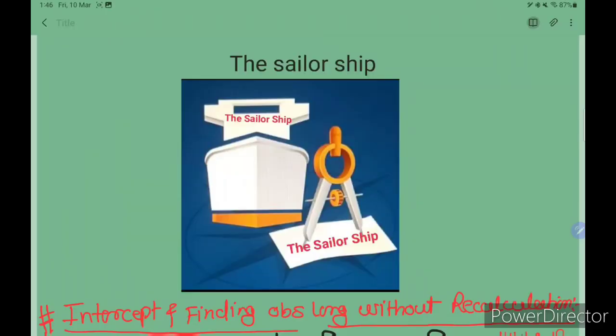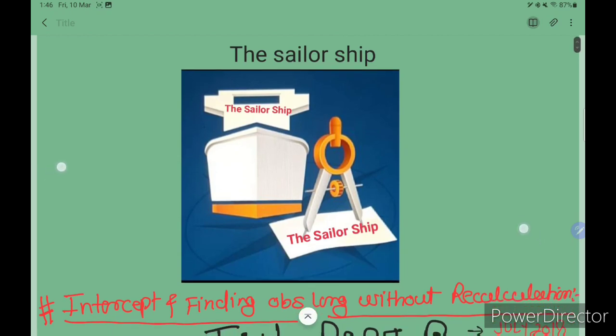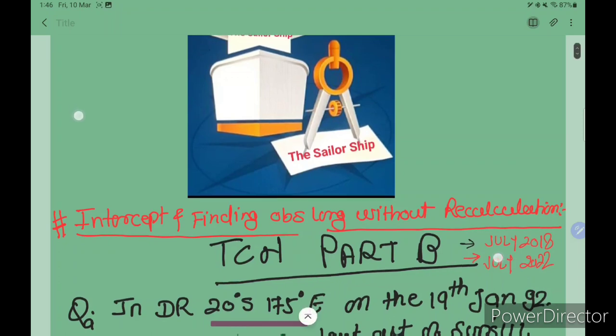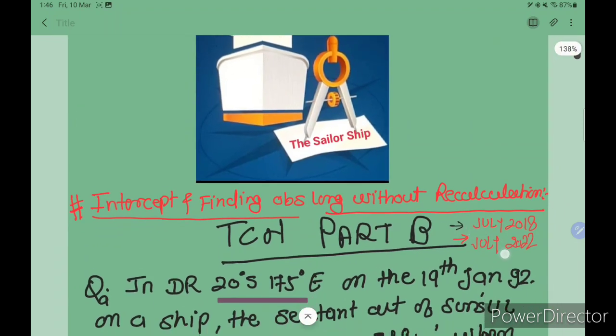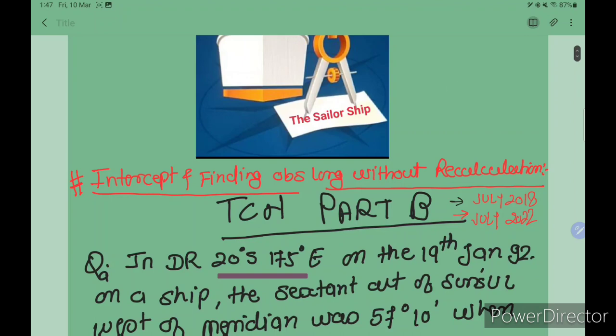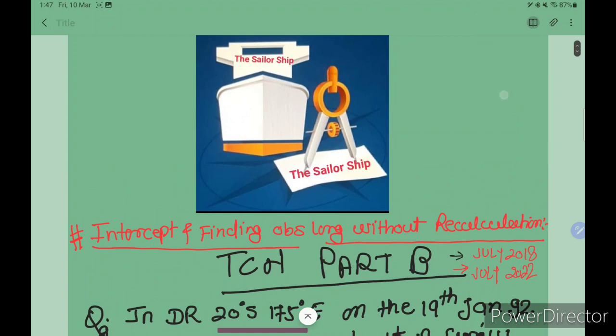Hello friends, once again welcome back to The Sailor Ship. Today we are going to discuss chart work, specifically TCNS Part B. There is one question in my group where many people are asking about the type of intercept and finding the observed longitude without recalculation. Students are finding difficulties with the concept of intercept and finding observed longitude without recalculation. This question is repeated in July 2018 and July 2022, so we'll solve this question here.